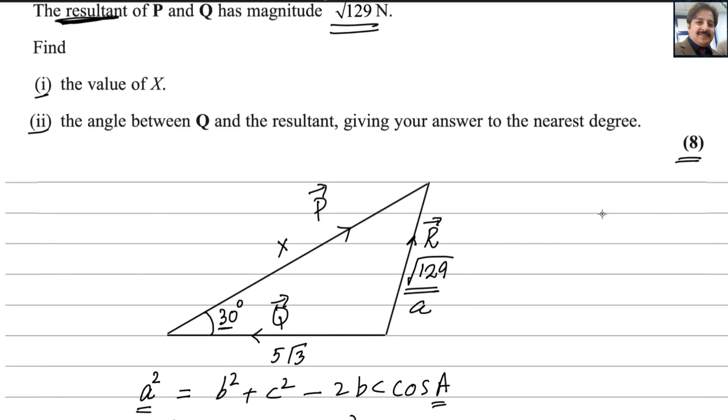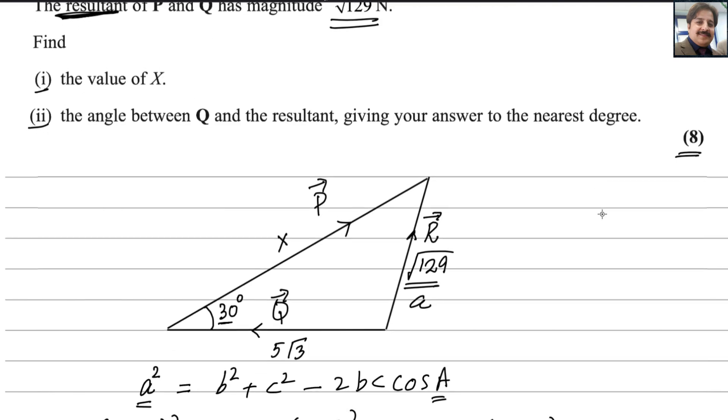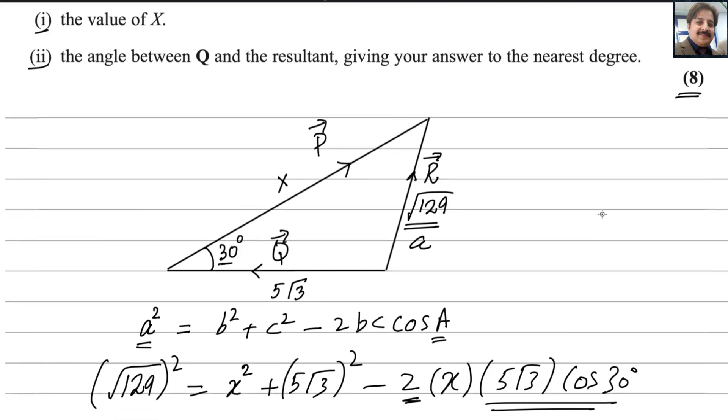For second part the angle between Q and the resultant. Give your answer to nearest degrees. Nearest degrees means you should get the whole number. You need to find this angle. This angle let us say beta. You need to find this angle. Because you already found the value of X.